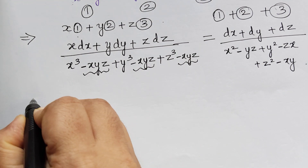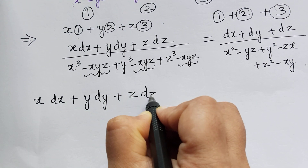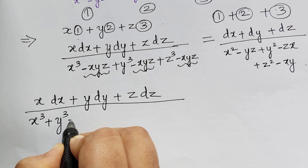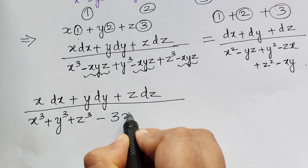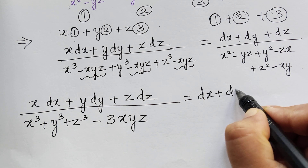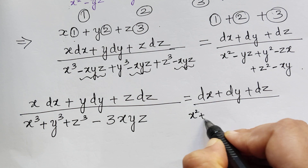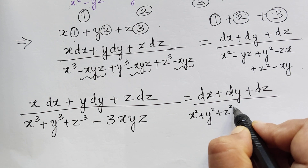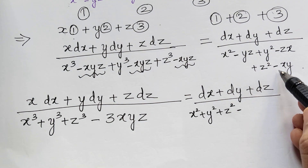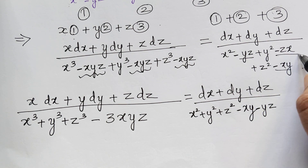We also perform operation 1 plus 2 plus 3, giving dx plus dy plus dz in the numerator. In the denominator: x squared minus yz plus y squared minus zx plus z squared minus xy. Gathering terms: x squared plus y squared plus z squared minus xy minus yz minus zx.